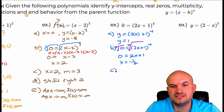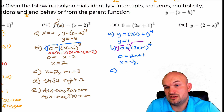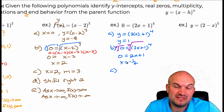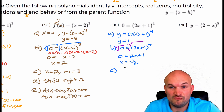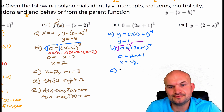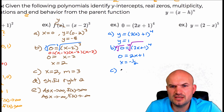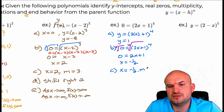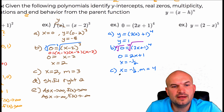To find the multiplicity, I just look at the power and see that's the repetition of my one zero. So the zero is x equals negative one half with a multiplicity equal to four.